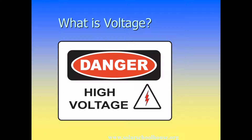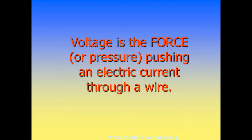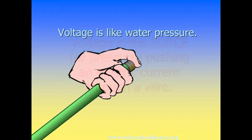So what is voltage? What does this word really mean? Voltage is the force or pressure pushing an electrical current through a wire. Voltage pushes electricity through a circuit. Imagine you're stopping the flow of water through a garden hose by holding your thumb tightly on the end. You can feel the pressure of the water trying to push your thumb off the end of the hose. This pressure — this water pressure — is similar to the pressure that pushes electricity through a wire, and your thumb is like the switch in a circuit.